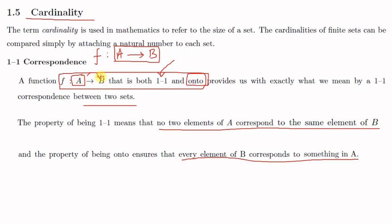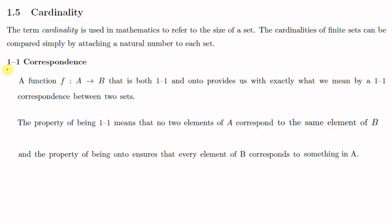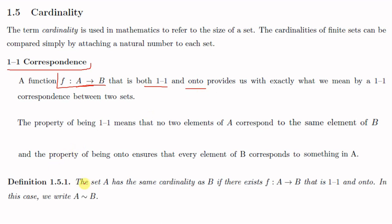Onto means every element of B should be an image of some element of A. So a one-to-one correspondence between sets A and B means there exists a function f from A to B which is both one-to-one and onto. We have a definition: a set A has the same cardinality as B if there exists f from A to B that is one-to-one and onto.